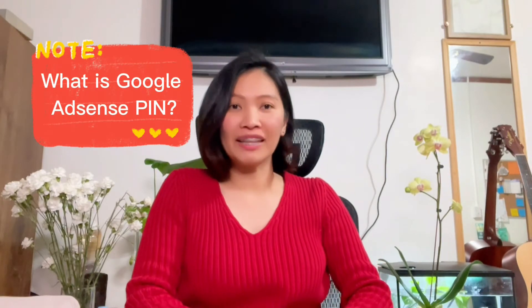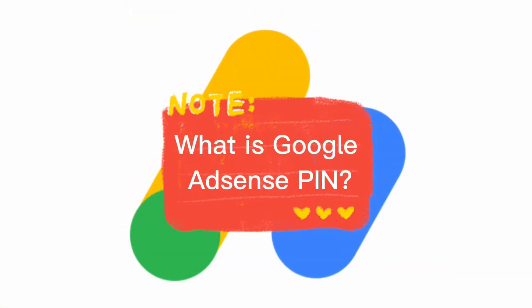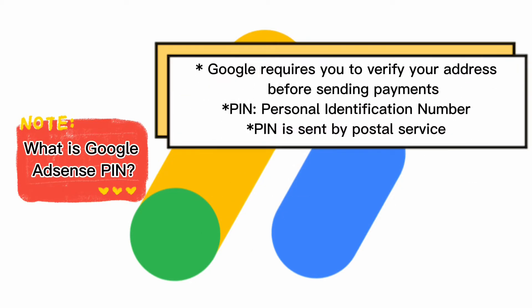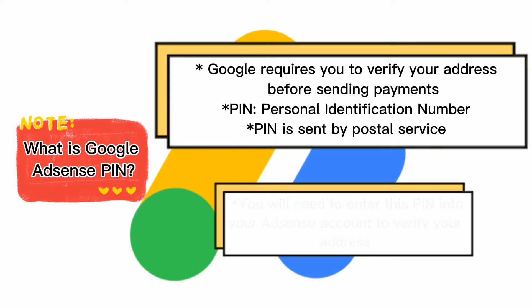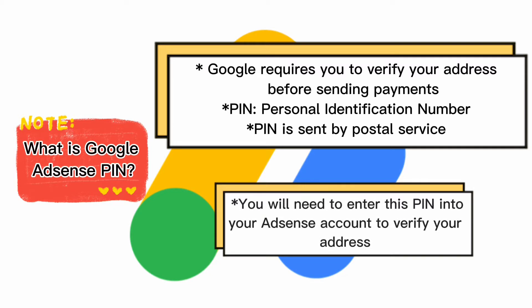First of all, what is a Google AdSense PIN? In order to protect the security of your accounts, Google requires you to verify your address before sending payments. Once you have received a minimum threshold of earnings, Google AdSense will mail you your personal identification number or PIN to your payment address. Once you receive this PIN from the postal service, you will need to enter it within your AdSense account. If you enter the PIN correctly, your account will be verified and you are eligible to start receiving payments.